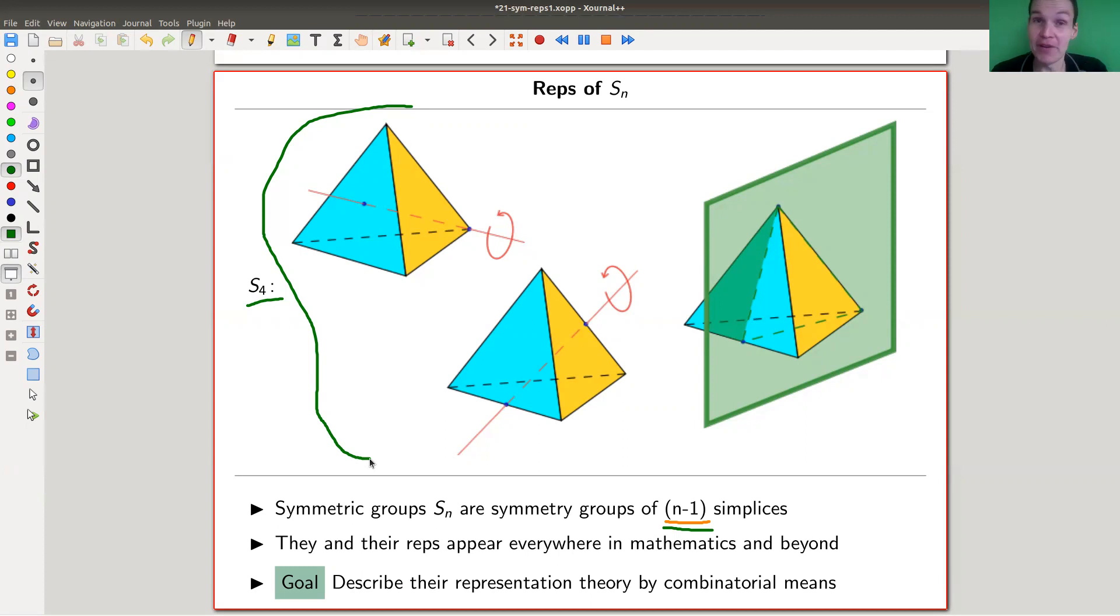Obviously, up to this point, we don't understand them really well. I mean, in the series of videos, the representation theory of the symmetric group over the complex numbers is well understood since Frobenius.